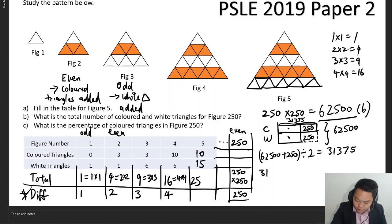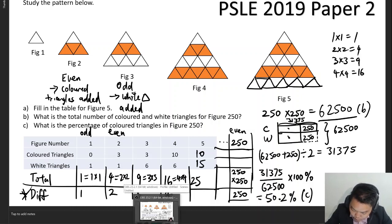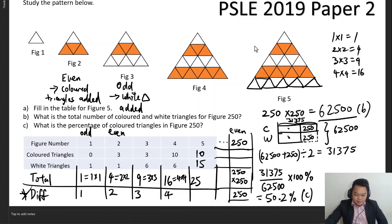Which means to say that the percentage will be 31,375 out of a total of 62,500 multiplied by 100 percent. This would give us 50.2 percent, and this will settle part C. Perfect, okay.